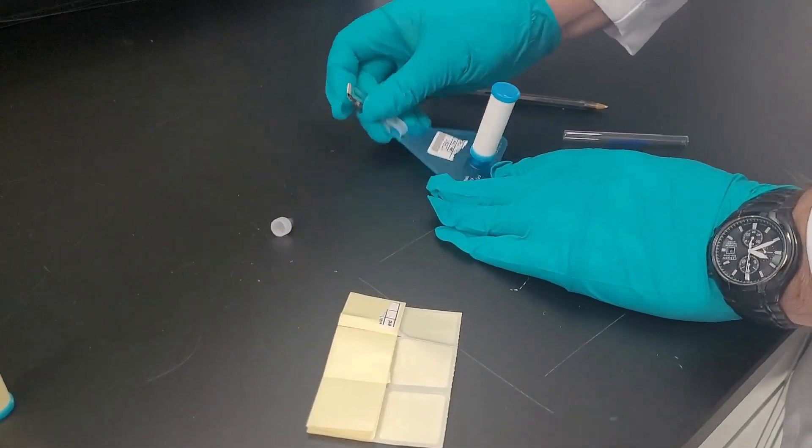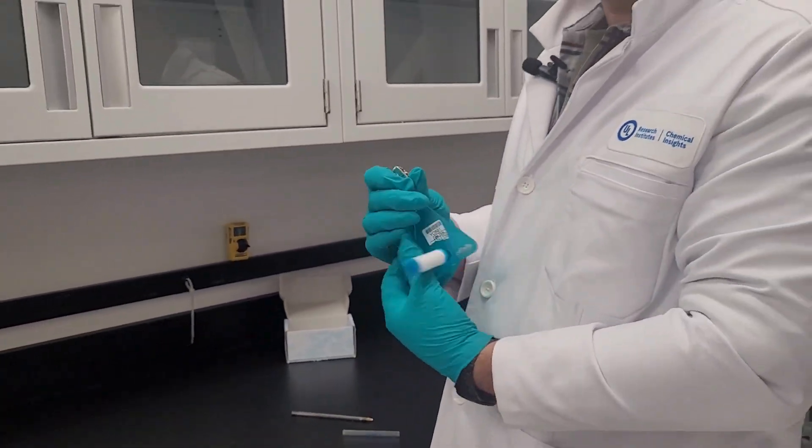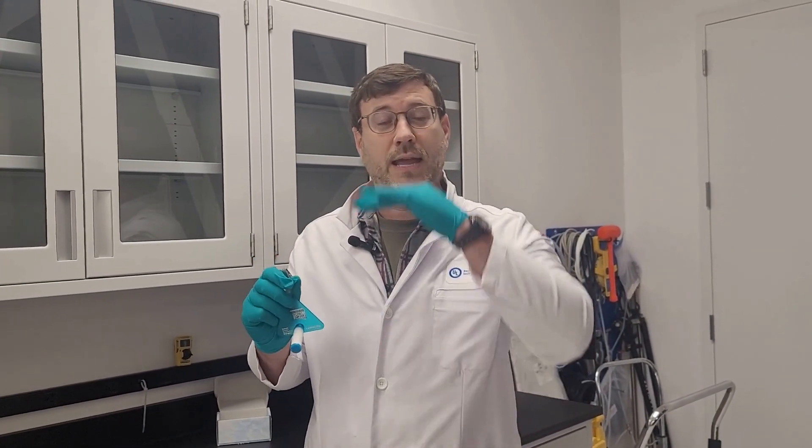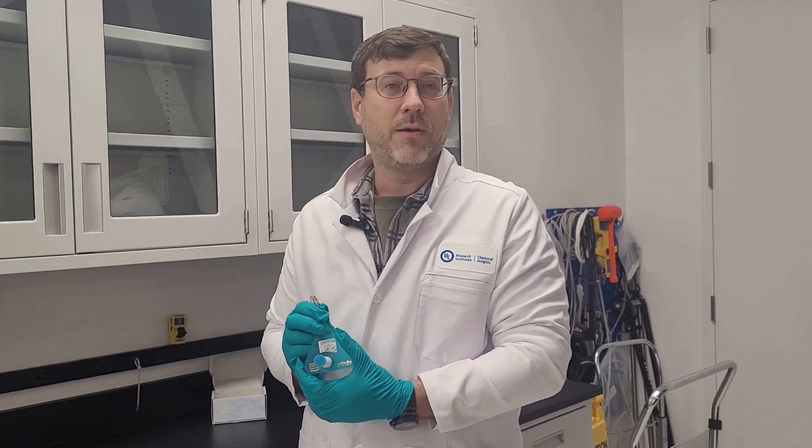And we are then going to take our passive sampler and hang it at a breathing zone height of somewhere in between five and five and a half feet to represent what you would be exposed to in the event that you were in the environment.